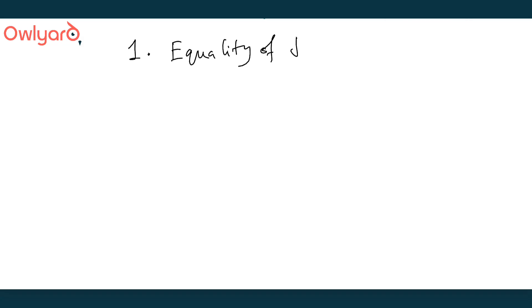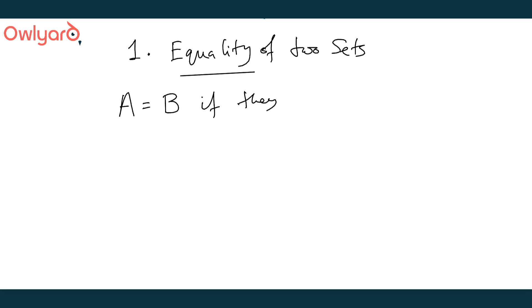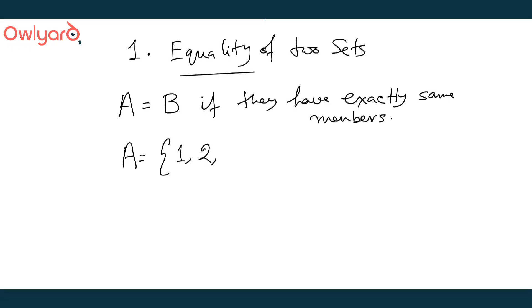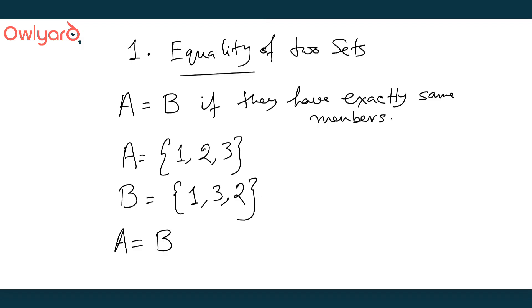Let's start with the simplest one: equality of two sets. Since a set is a well-defined collection of distinct objects, we can say that A equals B, where A and B are both sets, if they have exactly the same members. The order doesn't matter. For example, if A contains 1, 2, and 3, and B has 1, 3, and 2, the order doesn't matter — they have exactly the same members, and we can clearly say that A equals B.